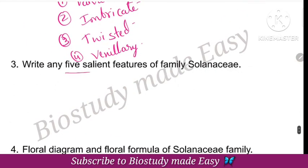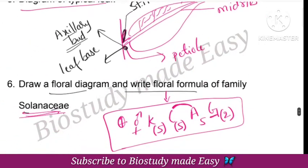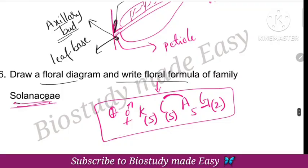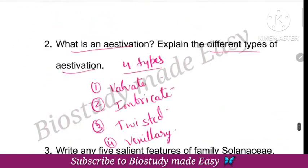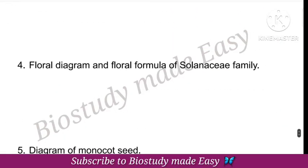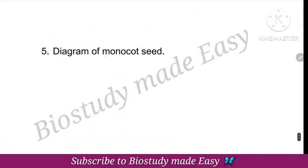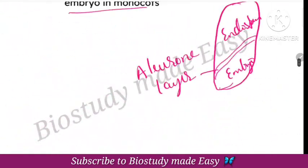Next, write five salient features of a family — very important. You can explain the floral characters of the family. Other important topic: the diagram of monocot seeds. These are all the questions from Morphology of Flowering Plants.